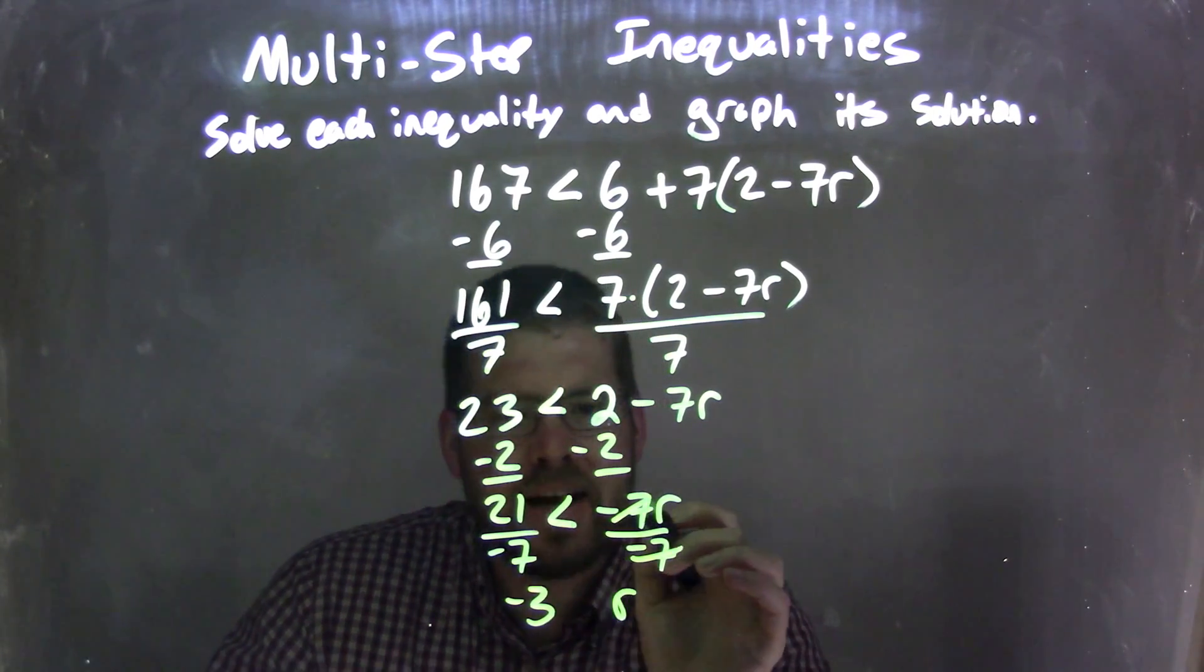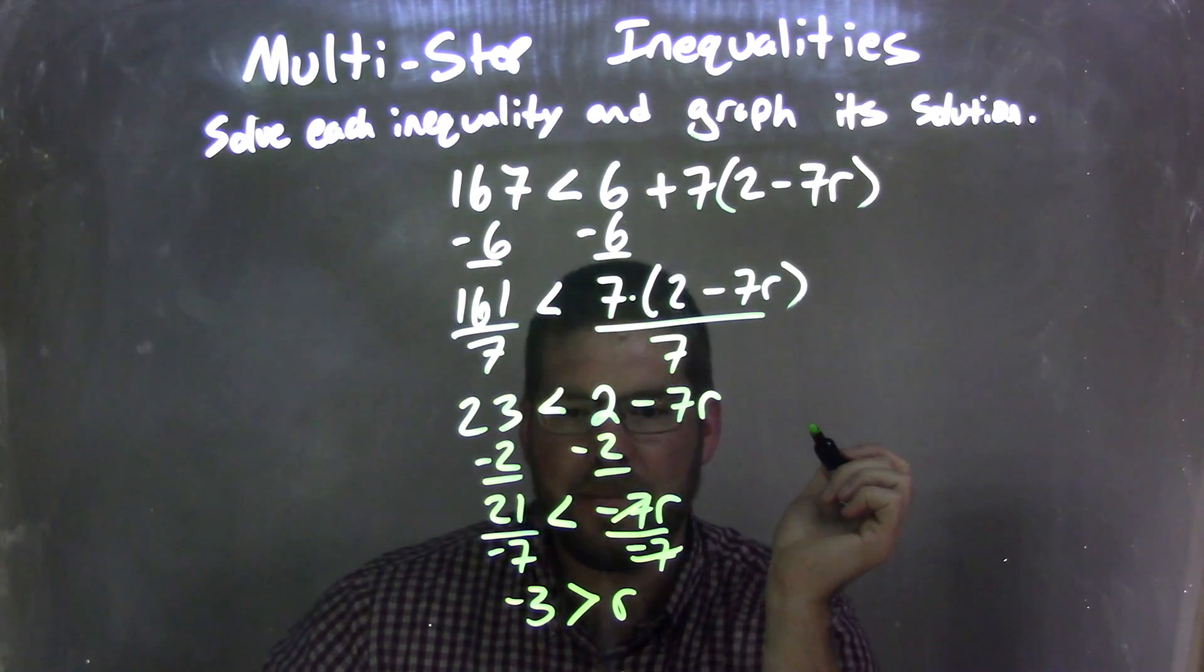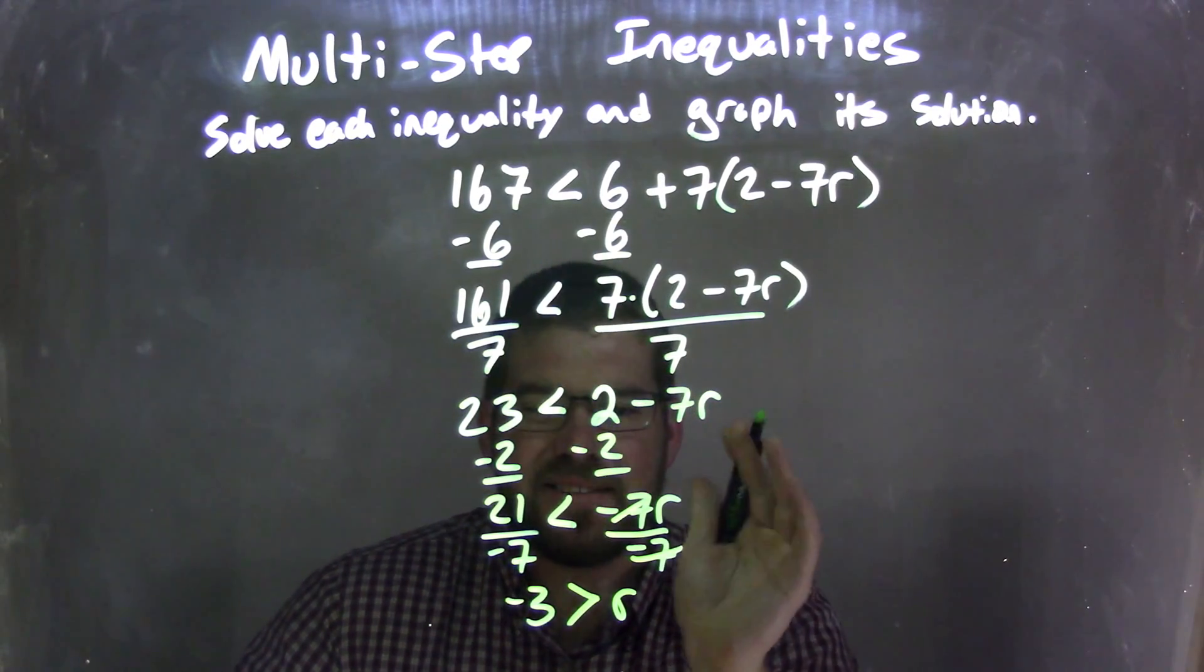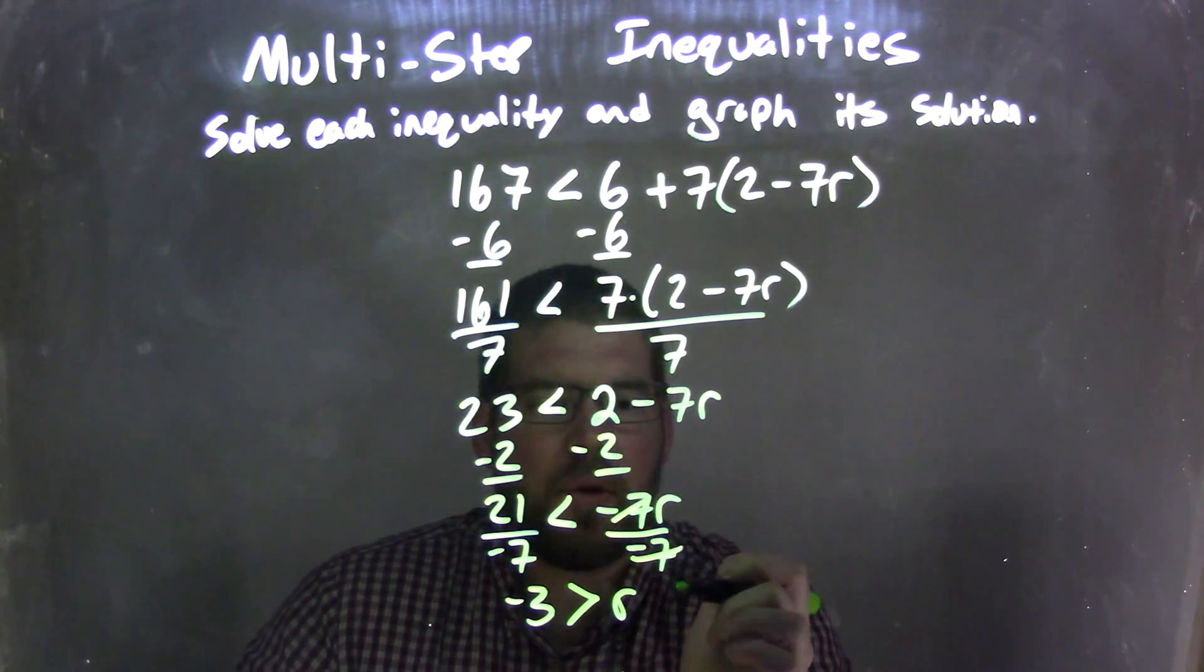Remember, we're dividing by a negative over the inequality. The sign needs to flip.